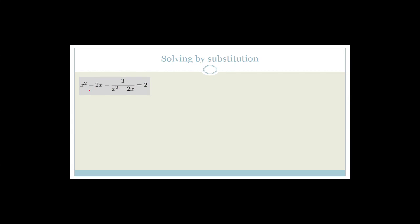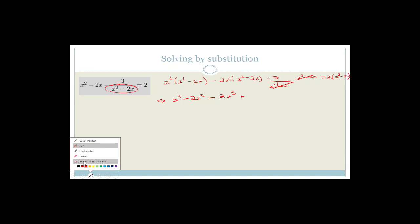If you get given a question like x squared minus 2x minus 3 over x squared minus 2x equals 2, obviously in order to factorize this, we want to get rid of the denominator. One thing we could do is multiply the whole thing through by the denominator - but then you'd end up with x to the 4 minus 2x cubed terms, and it would just be terrible. So what we can do instead is substitute.